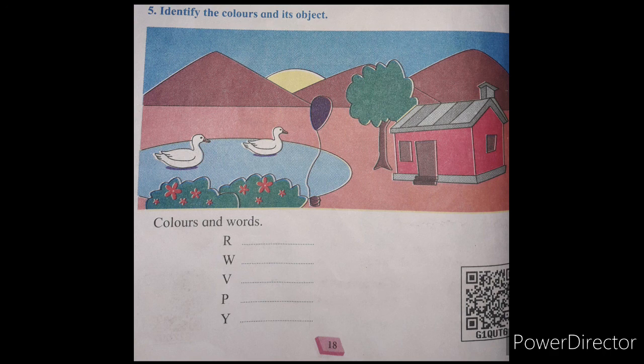W means white, and there are two ducks with white color, so write 'white ducks.' V means violet, so write 'violet balloon.' P means pink, write the pink color name and 'pink house.' Y means yellow and it is a sun, so write 'yellow sun.'